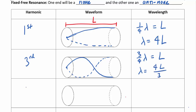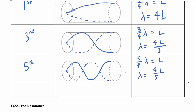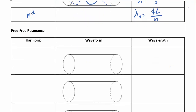Jumping to the fifth harmonic, we add another node: the wave goes up, down, up, down, ending at an antinode. Here five quarters of a wavelength fit into L, so λ = 4L/5. The general formula for the nth harmonic of a fixed-free system is λ_n = 4L/n, remembering that only odd-numbered harmonics exist.